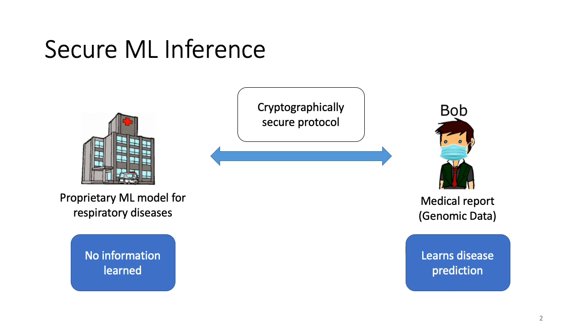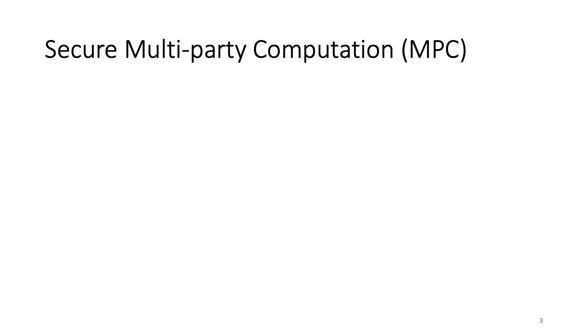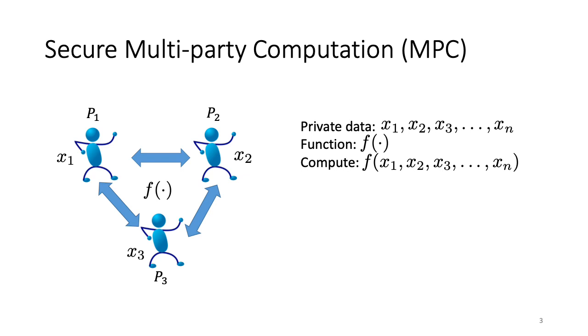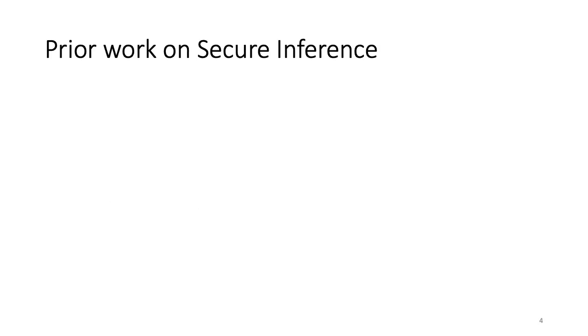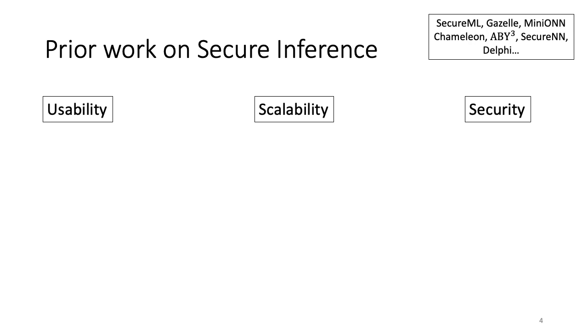Secure multiparty computation, often referred to as MPC, is an interesting line of research in cryptography which focuses on constructing such protocols. I don't need to define MPC at this workshop, so I will just flash to this slide for completeness. While the theory of MPC had been developed way back in the 1980s with protocols like Yao's Garbled circuits and GMW, it is only recently that these protocols have become efficient enough to be used in practice. While there have been a lot of recent works that use MPC for the purpose of secure inference, they have fallen short on three important aspects: usability, scalability and security. Let us look at each of these aspects now.